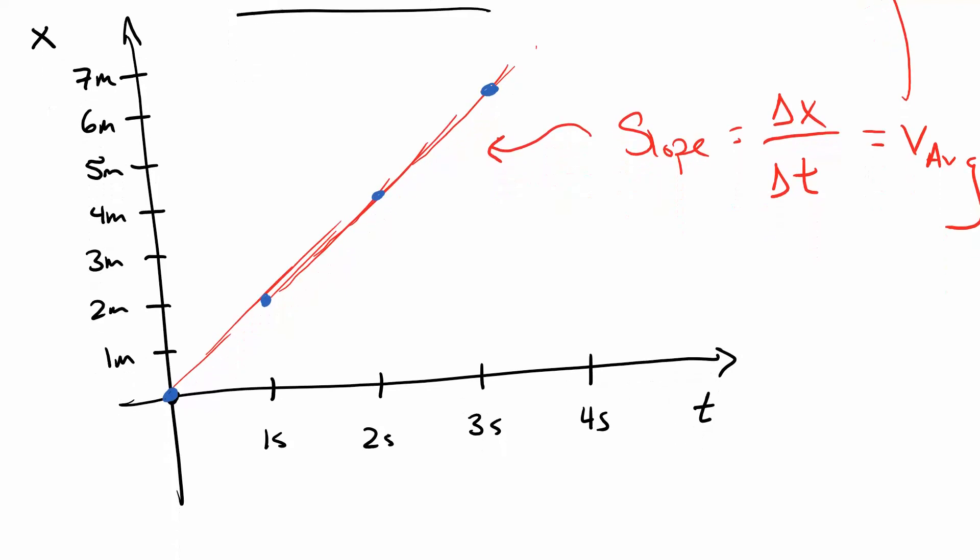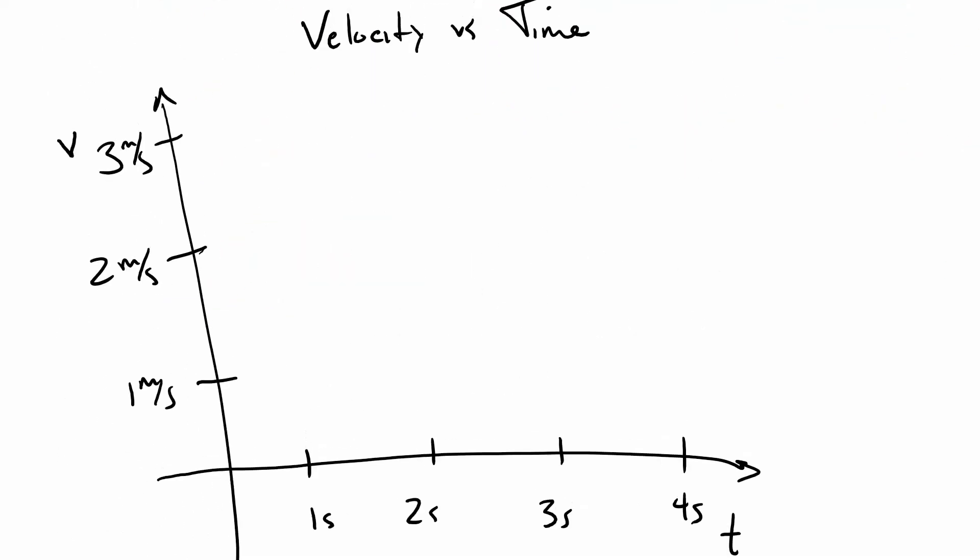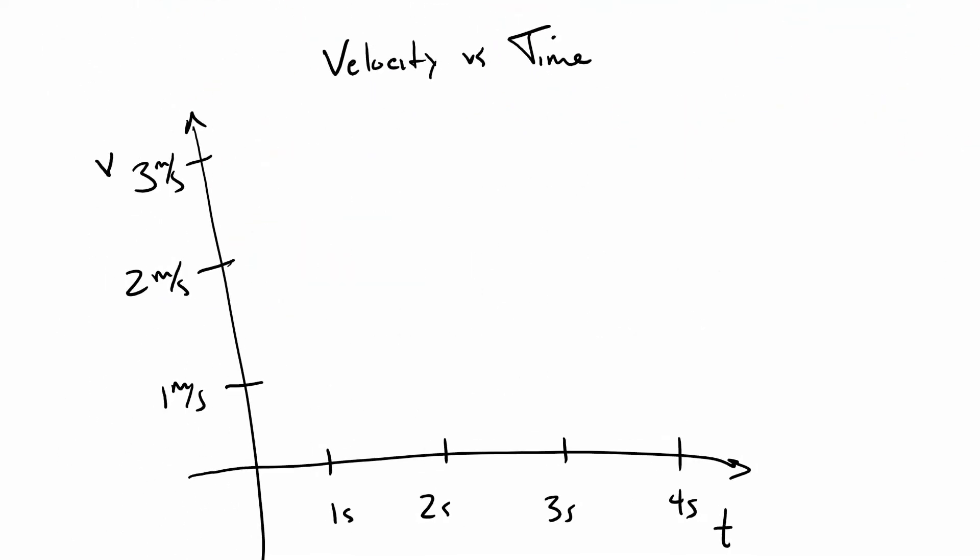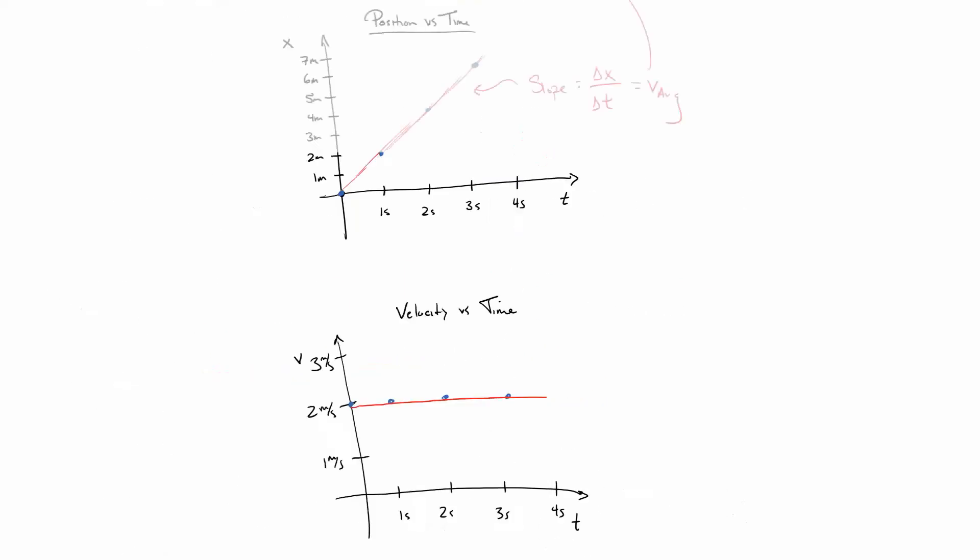And so we might also want to represent, then, a velocity versus time graph. In this case, it's going to be pretty straightforward. It seems like at every moment, we're just going at two meters a second. So at some point, we're going to expand our ability to talk about fancier velocity time graphs, except for that one little bump there, I guess.